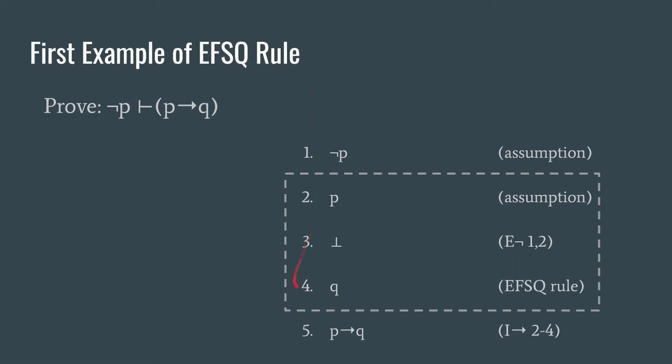First we're going to give some examples of EFSQ in action. So we want to get to P→Q from our only premise being ¬P. The way to understand this is to start from the bottom. How do we get to P→Q? Well we know we're going to need to get from P to Q inside a box, but now we've got a new tool for getting to the end of the box. Namely just secure a falsum and then apply the EFSQ rule and we can get any proposition we want.